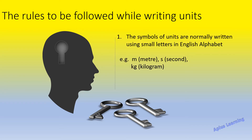The first rule states that the symbols of units are normally written using small letters in the English alphabet. A few examples: for meter we write the small letter 'm', for second it is the small letter 's', and for kilogram both 'k' and 'g' are written in small letters — 'kg'.